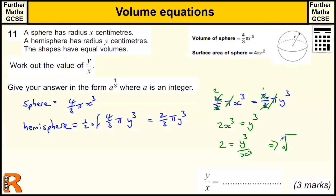So I've got the cube root of y cubed over x cubed equals the cube root of 2. So the cube root of y cubed over x cubed is just y over x is what we want, and the cube root of 2 can be written as 2 to the power of 1 third.